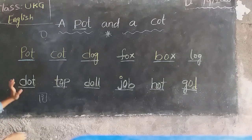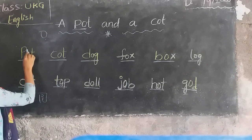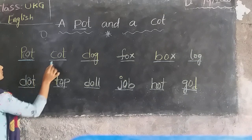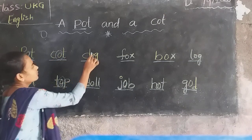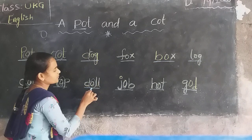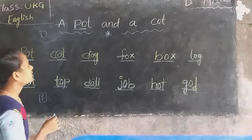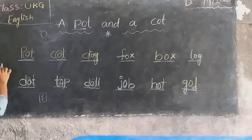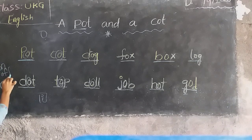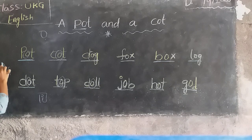See here. In all these words, the common letter is O. What is the common letter? O. The sound of O is O. For example, here: on, off. O — off, on, off.